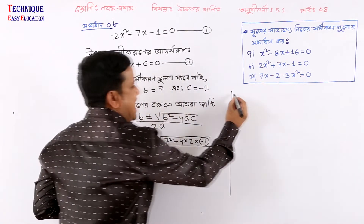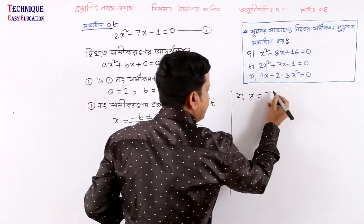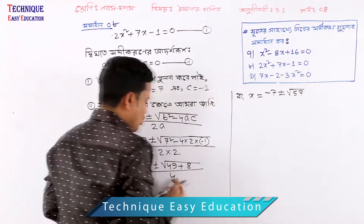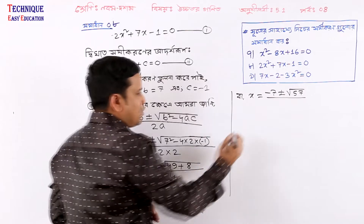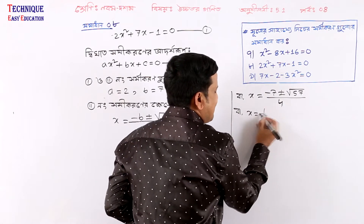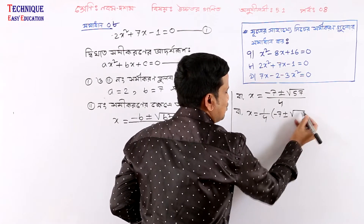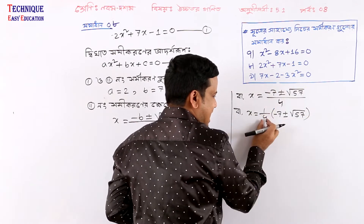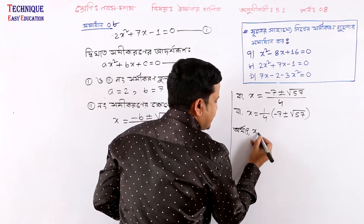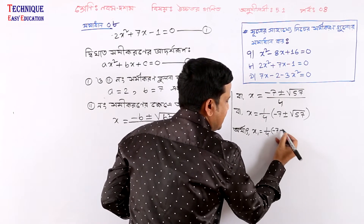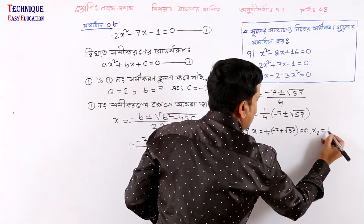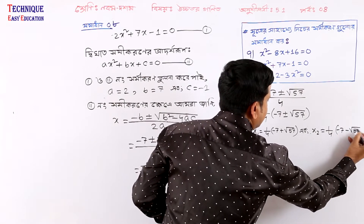Now we will divide by 2a, that means divided by 4. So x equals 1 by 4 times minus 7 plus minus root 57. So x1 is equal to 1 by 4 times minus 7 plus root 57, and x2 is equal to 1 by 4 times minus 7 minus root 57.